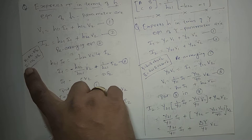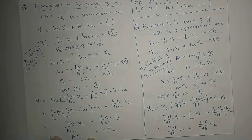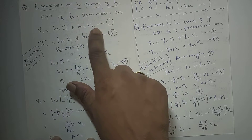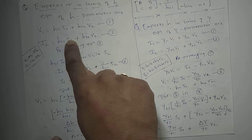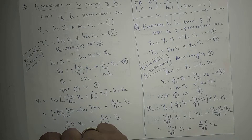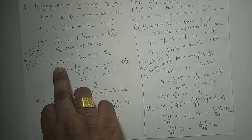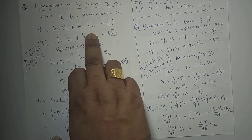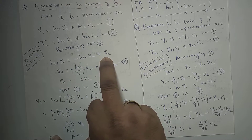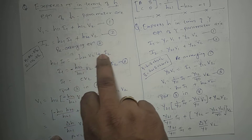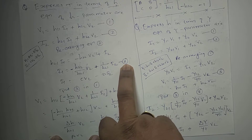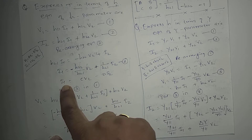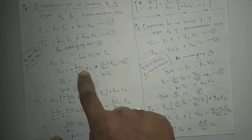We need i1, i2, and v2. From equation 2, we rearrange to find i1. So h21·i1 equals minus h22·v2 plus i2, which gives i1 equals minus h22 upon h21 times v2 plus 1 upon h21 times i2. This is called equation 3. Comparing this with the standard t parameter equation i1 equals C·v2 minus D·i2, we identify C equals minus h22 upon h21 and D equals minus 1 upon h21.